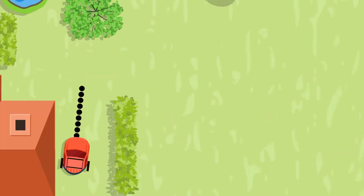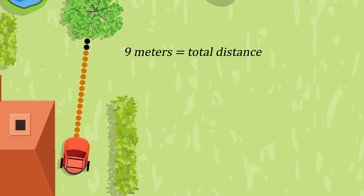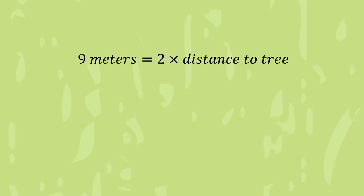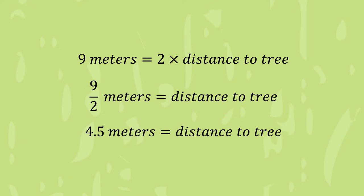We know that the light pulse traveled 9 meters. That's our total distance. However, that counts the trip from the robot to the tree and back again. So the robot is actually only half that distance from the tree, 9 divided by 2, which tells us the robot is 4.5 meters away, or about 15 feet from the tree.